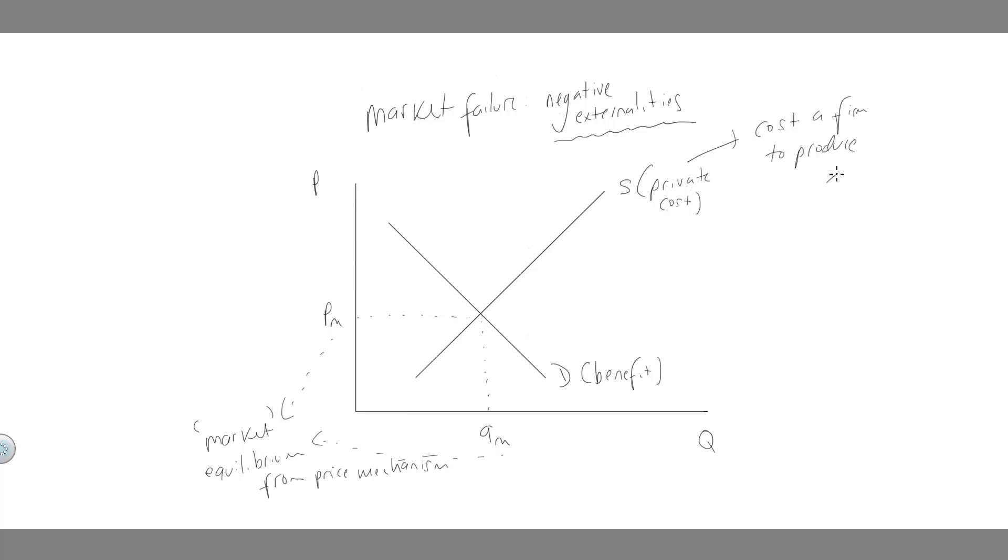What I would like you to think about is that this is not including the environmental impact. It's just strictly what it costs them to produce. So now we're starting to think, what would happen if we put in what it costs to produce? I'm going to try and draw this as straight as possible.